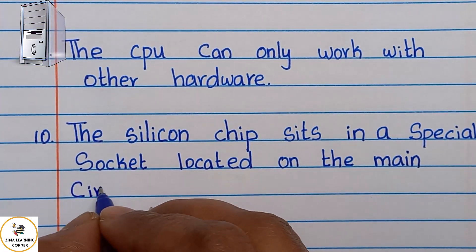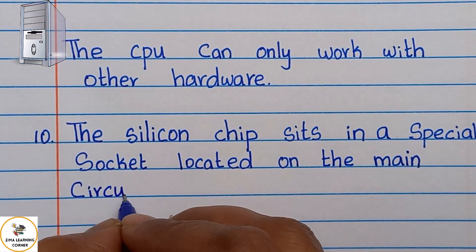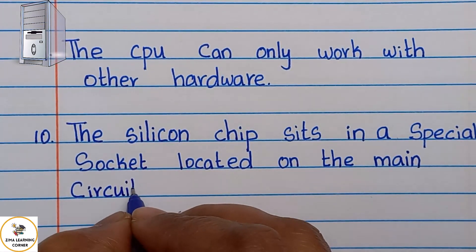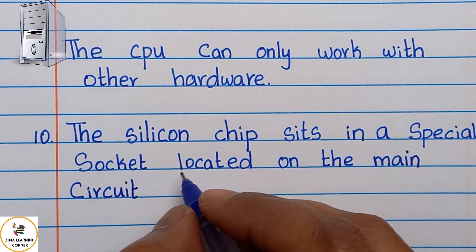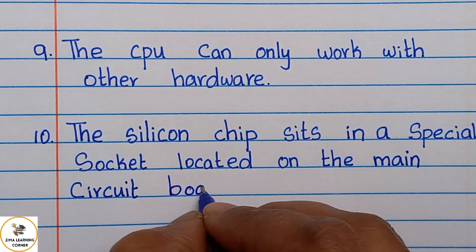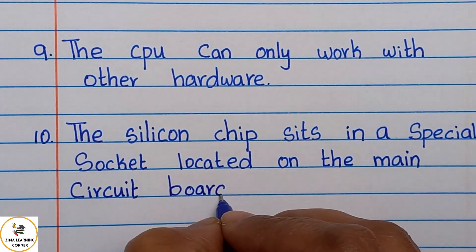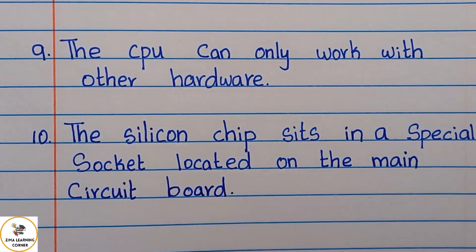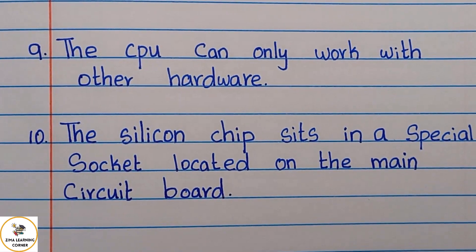Point number ten: The silicon chip sits in a special socket located on the main circuit board.